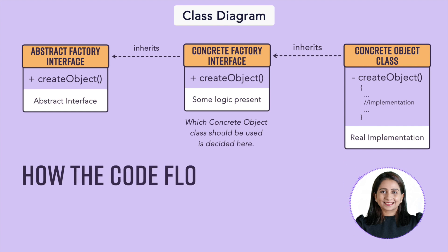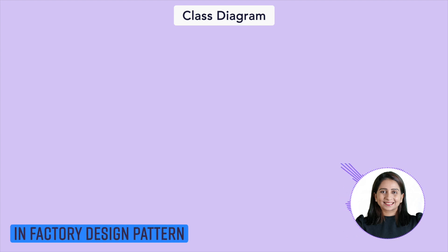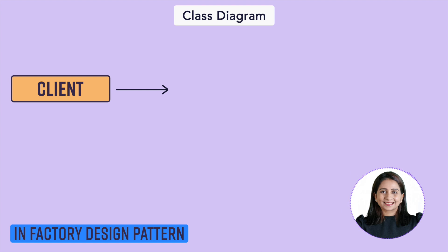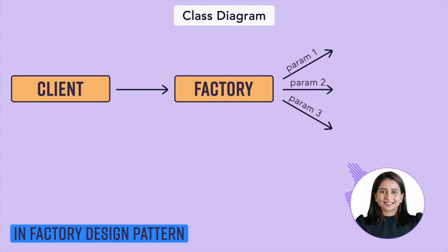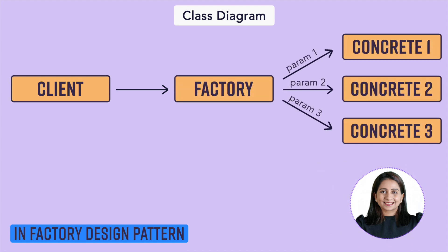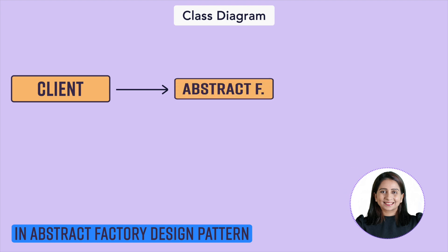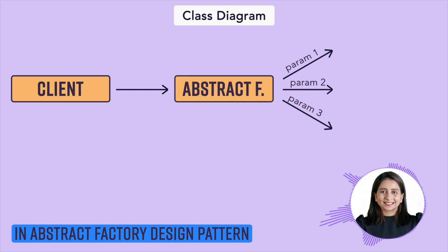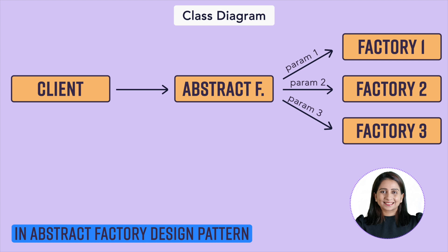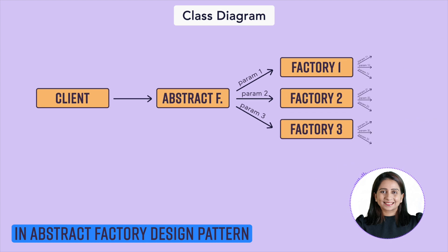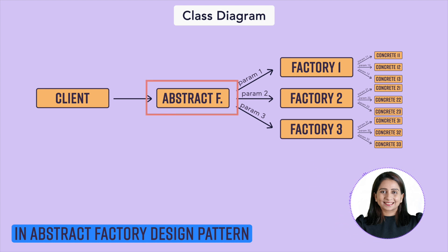Let's understand how the code flow looks. In the factory pattern, a client calls a factory and on the basis of some parameters, that factory calls functions which create concrete objects. In abstract factory, the client calls the abstract factory; on the basis of some parameters, that abstract factory calls one of the concrete factories, which internally calls its respective object implementations and returns that object. It is just one additional layer of abstract factory that decides which factory to call.